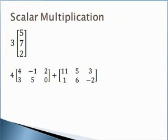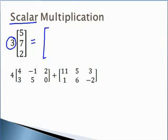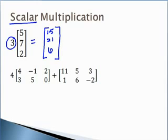We can also multiply any matrix by a number. When working with matrices, the number we multiply by is referred to as a scalar. To do scalar multiplication, we simply distribute that number to all elements in the matrix. So multiplying by three gives us the matrix 15, 21, 6 — still with the same dimensions as the original.